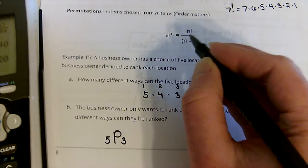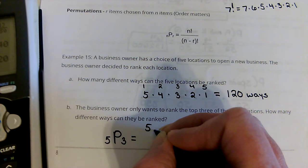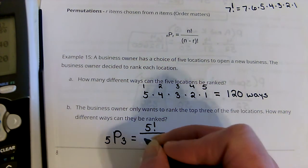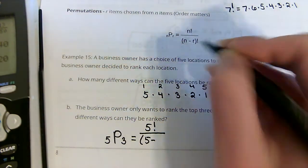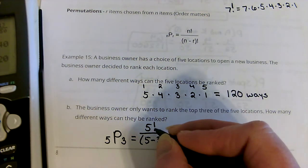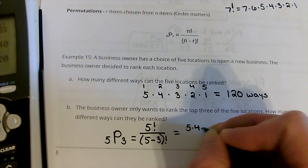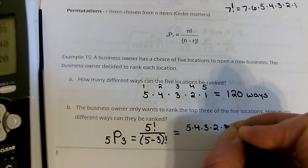This formula says we're going to take 5 factorial over 5 minus how many we're picking factorial. So, 5 factorial would be 5 times 4 times 3 times 2 times 1.